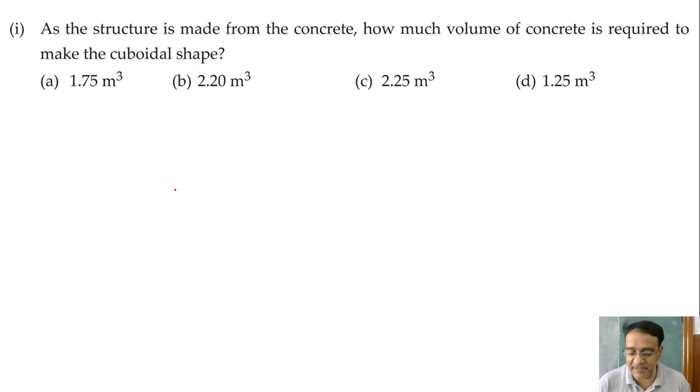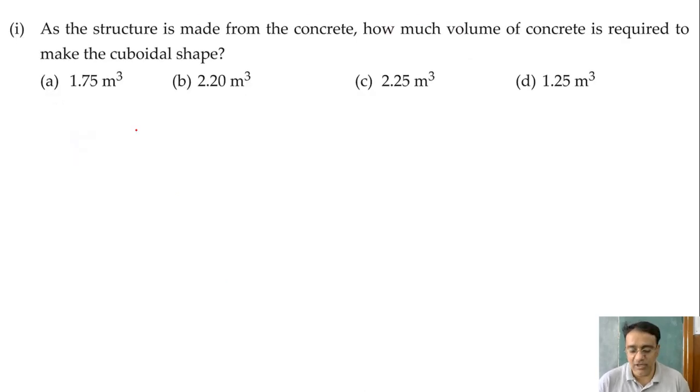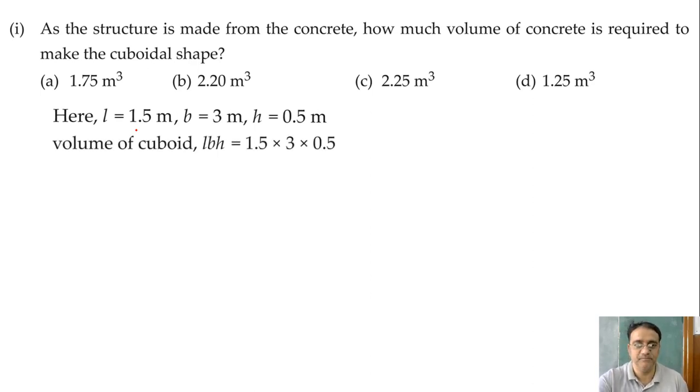So length is given 1.5 meter, breadth is given 3 meter and height is given 0.5 meter. So now we are going to substitute this in the volume: 1.5 into 3 into 0.5. So this we can write 4.5 into 0.5. And this will be equal to 2.25 meter cube.